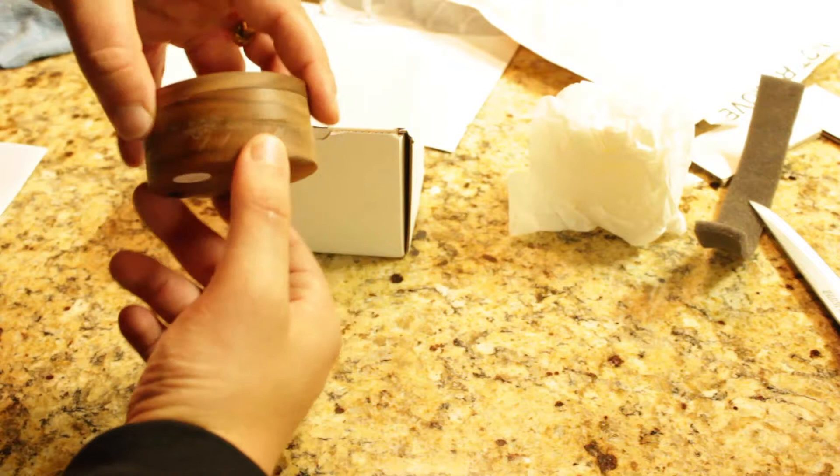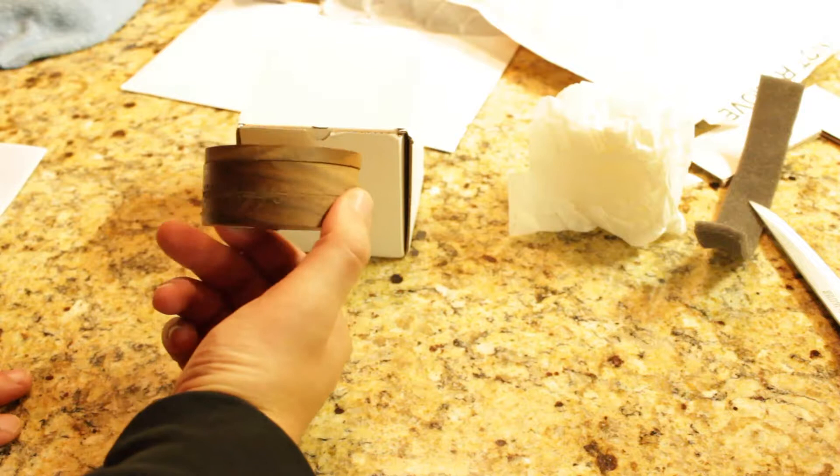On the side here you can see it has the Elvish runes or Elvish script which is on the One Ring itself. It says one ring to rule them all, one ring to bind them, and in the darkness find them. It's pretty much the saying that's on the side of the One Ring as well.